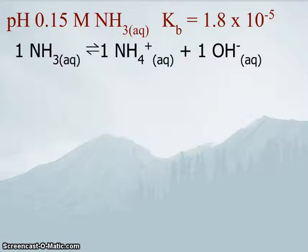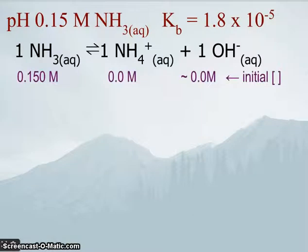I know this is a weak base, and I know its Kb value is 1.8 times 10 to the minus 5. It's a relatively straightforward calculation which we've done many times before. So we have 0.15 molar ammonia starting with 0, effectively 0, and equilibrium shifts to the right.